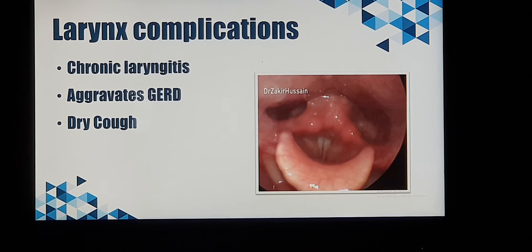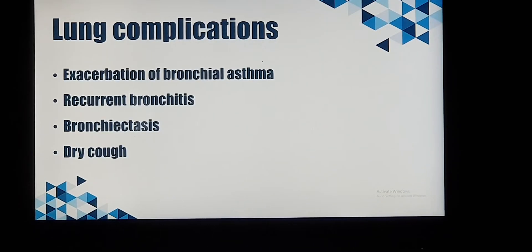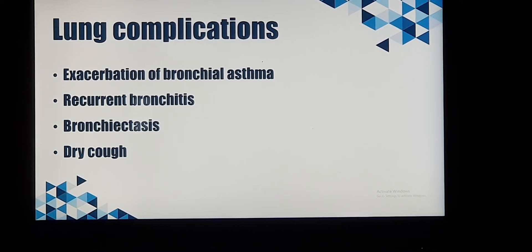Some patients complain only of a dry, non-productive cough — thin and white in character but recurring persistently. Coming to lung-related complications: dry cough is the most common. If the patient is a bronchial asthma patient who normally gets three or four episodes of breathing difficulty per year, and also has sinusitis, those episodes can almost double to four to eight per year — that is exacerbation of bronchial asthma. Some patients also present with chronic infection of the bronchus, termed bronchitis, and if the same patient is a smoker it can lead to bronchiectasis.